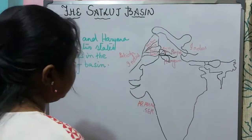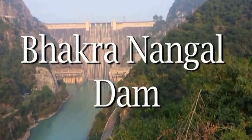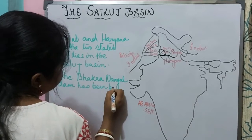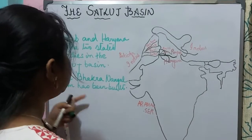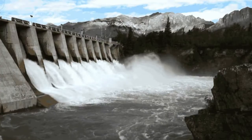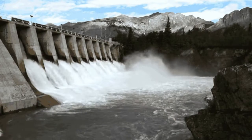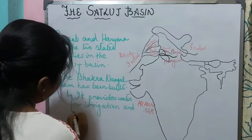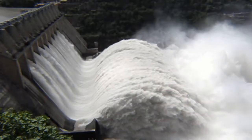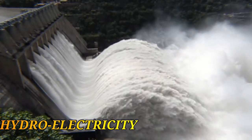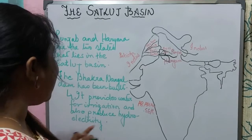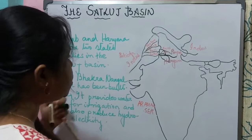On the Satluj basin, the Bhakra Nangal Dam has been built. This Bhakra Nangal Dam, which is built on the Satluj river, is very useful because it provides water for irrigation, which can be used for agriculture, and it also helps to produce hydroelectricity. So the Bhakra Nangal Dam is very useful, providing water for irrigation and producing hydroelectricity.